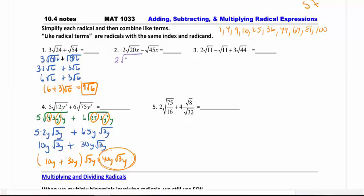So 20 can be rewritten as 4 times 5x. So square root of 4, a 2 comes out.